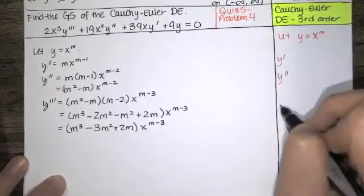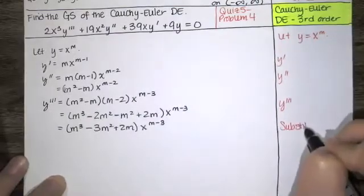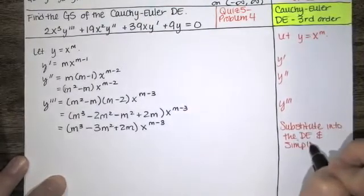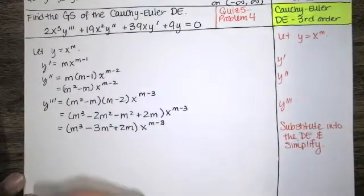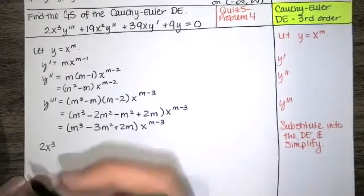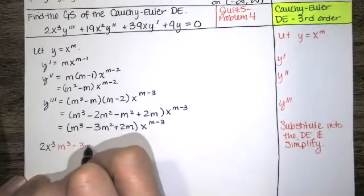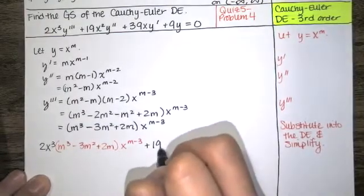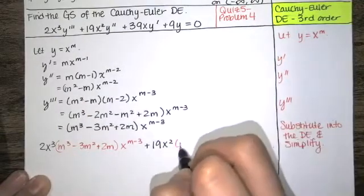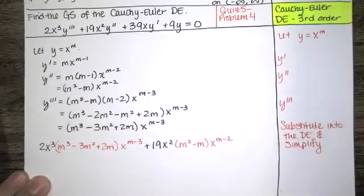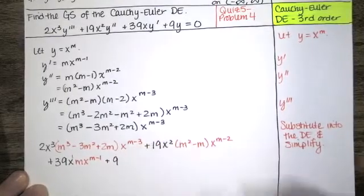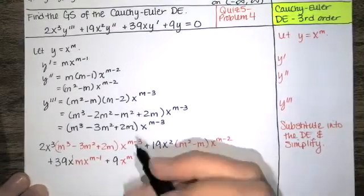So we computed the first, second, and third derivatives and then we're going to substitute those into the differential equation and simplify to solve for m. We have 2x cubed times y triple prime, plus 19x squared times y double prime, plus 39x times y prime, plus 9 times y, which is x to the m, and we set that equal to 0.